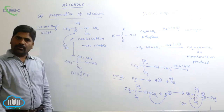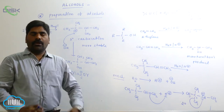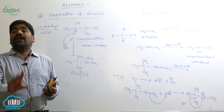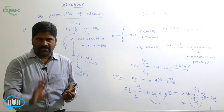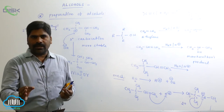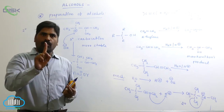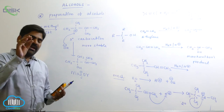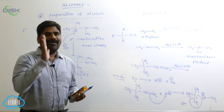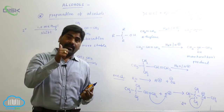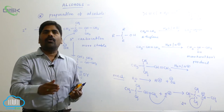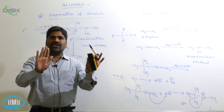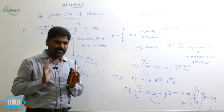So remember: when adding water to an alkene, follow two conditions — first, the Markovnikov product is formed; second, rearrangement is possible. Rearrangement always takes place whenever a carbocation is an intermediate in an organic reaction, and it proceeds from the less stable to the more stable intermediate. If rearrangement is not possible, it does not occur.